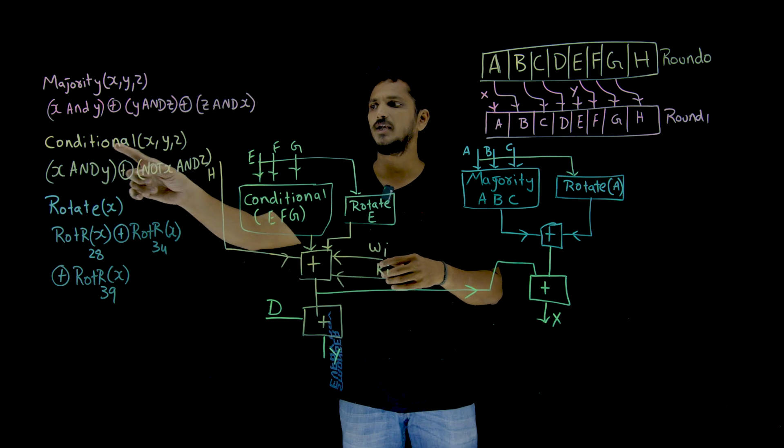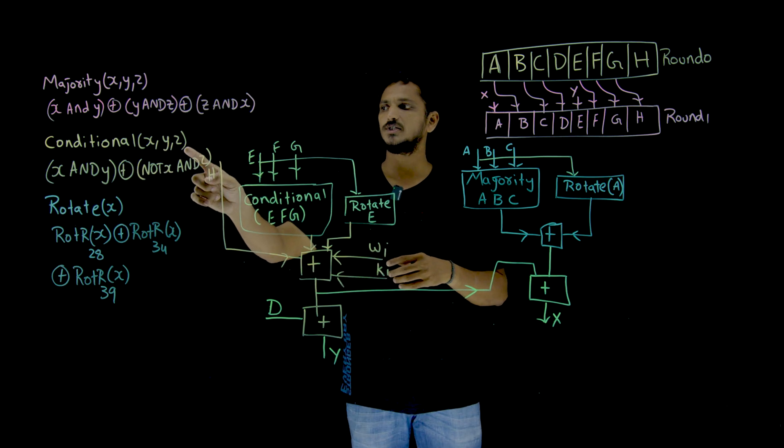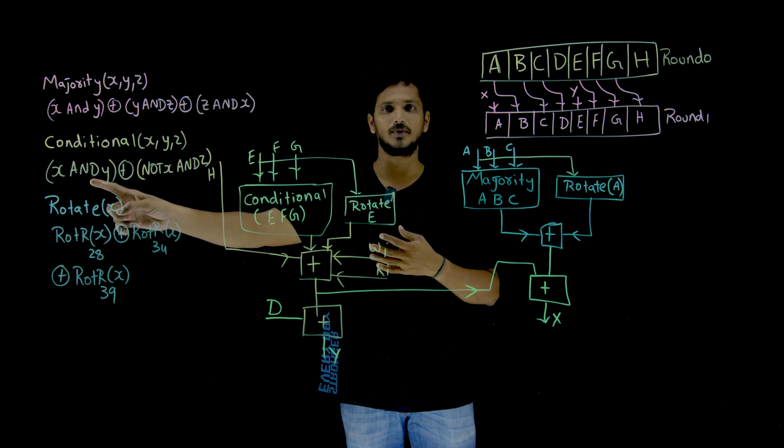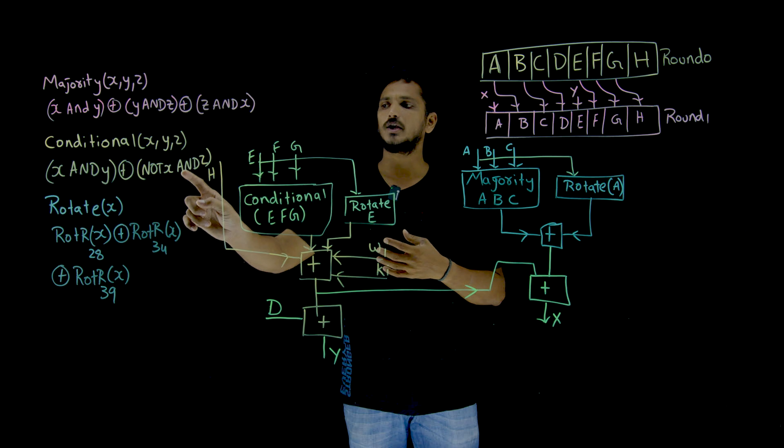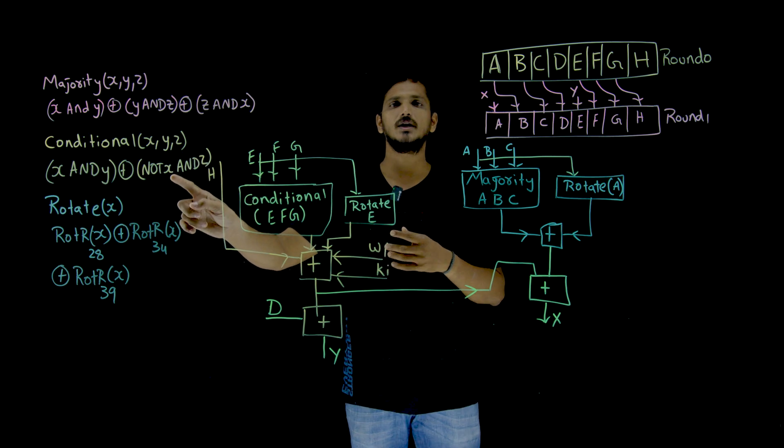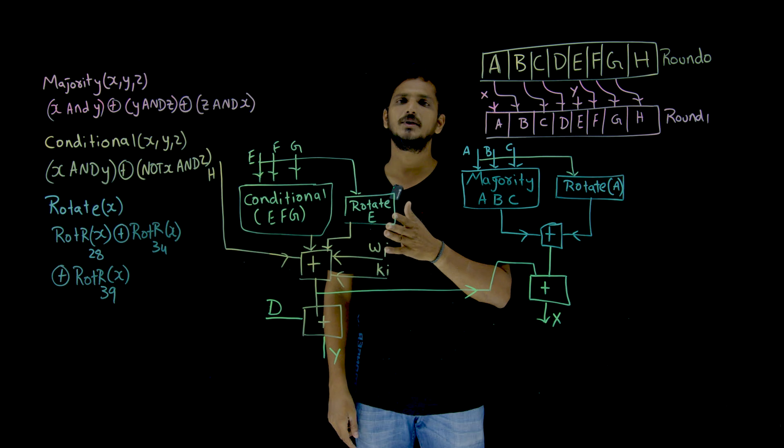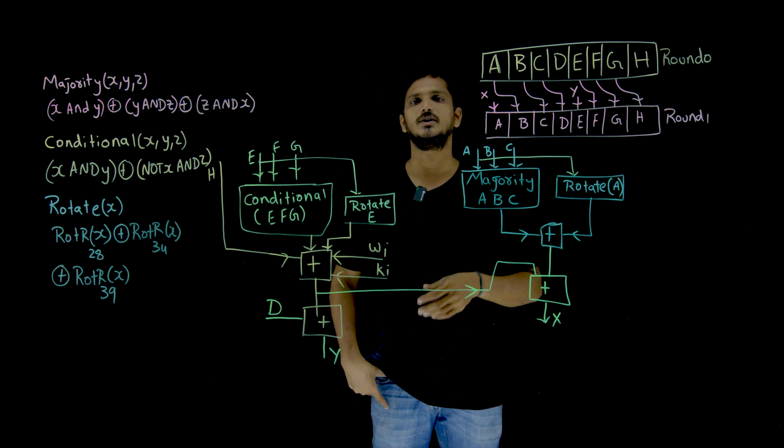Similarly, the conditional function, conditional of X, Y, Z is X and Y, bitwise AND operation, XOR, not X and Z. Not X means negation of X, complement of X. AND means bitwise AND operation Z value.